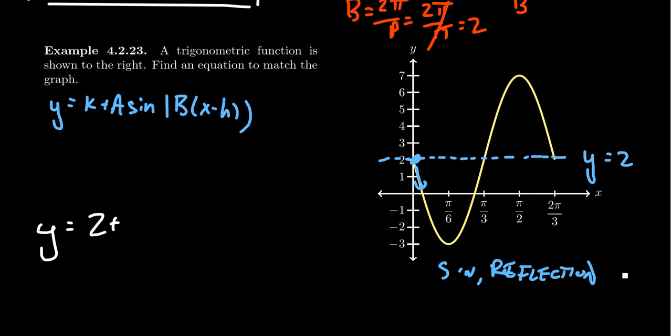Let's try to find the amplitude. The amplitude is how big these bumps are. How far above the midline do we go? This one goes all the way up to 7. The midline is at 2, so the amplitude is going to be 5, the difference 7 minus 2. But because it's been reflected, we need to have a negative sign incorporated in there. So we have y equals 2 minus 5 times sine.